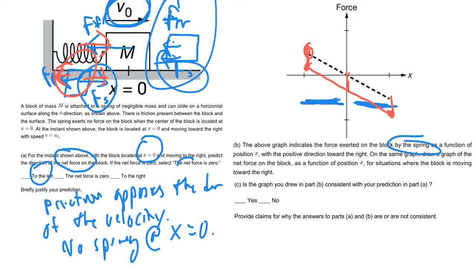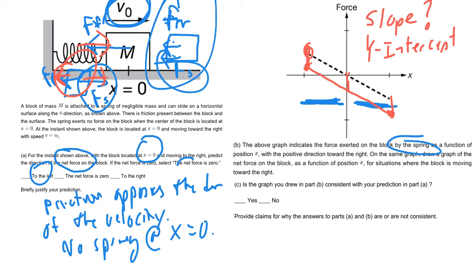Here's a bonus question: what is the meaning of the slope of this graph, and what is the meaning of the y-intercept? I'll put the answer in your question-answer document, but think about it and see if you can figure it out.